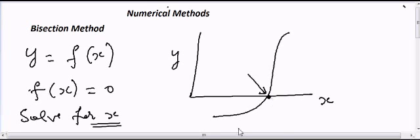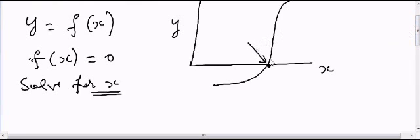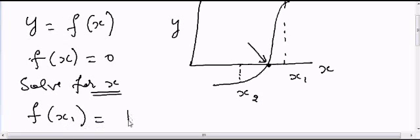How will you find this point? If you look carefully, if I put any value of x - suppose this is x1 and this is x2 - in this case f(x1) will be positive and f(x2) will be negative.